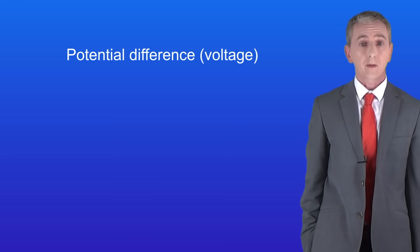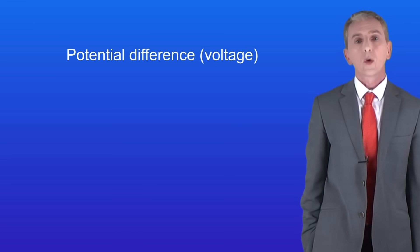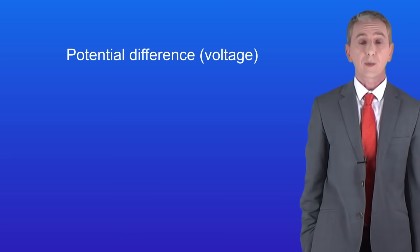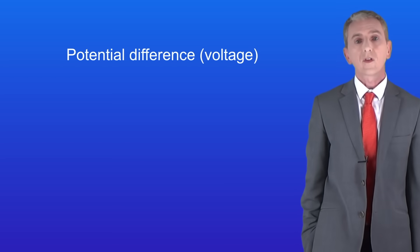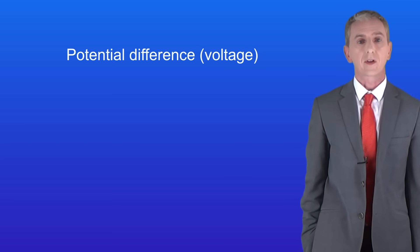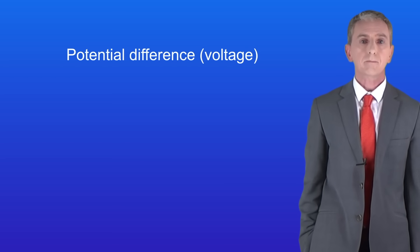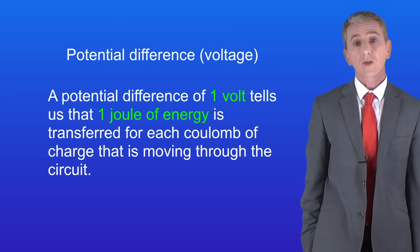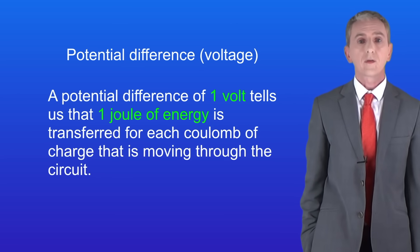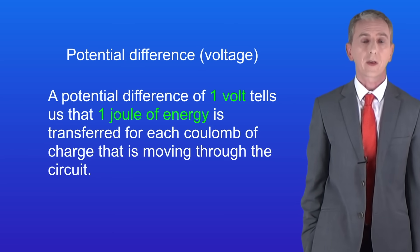So energy is transferred in electrical circuits, and we can explain this using the idea of potential difference. This is also called voltage, and you can use either expression in the exams. A potential difference of one volt tells us that one joule of energy is transferred for each coulomb of charge moving through the circuit.